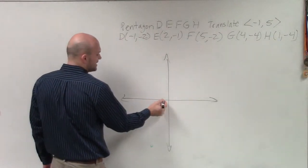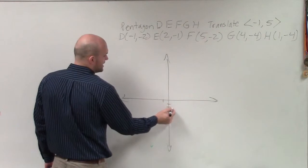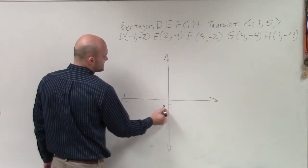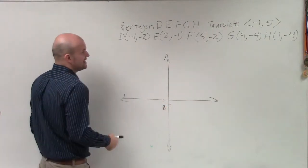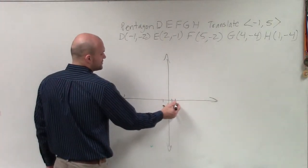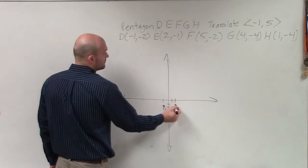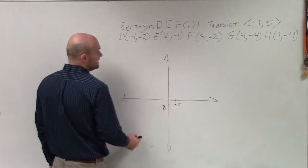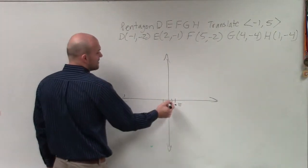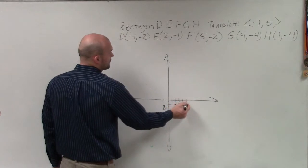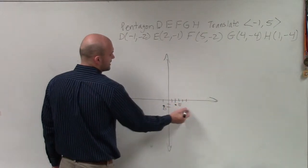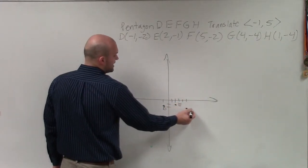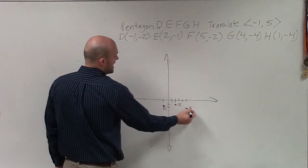So the first one I have is negative 1, negative 2 — that I'm going to label D. The next one I have is positive 2, negative 1 — that I'll label as E. Then I have 5, negative 2 — that I'm going to label as F.